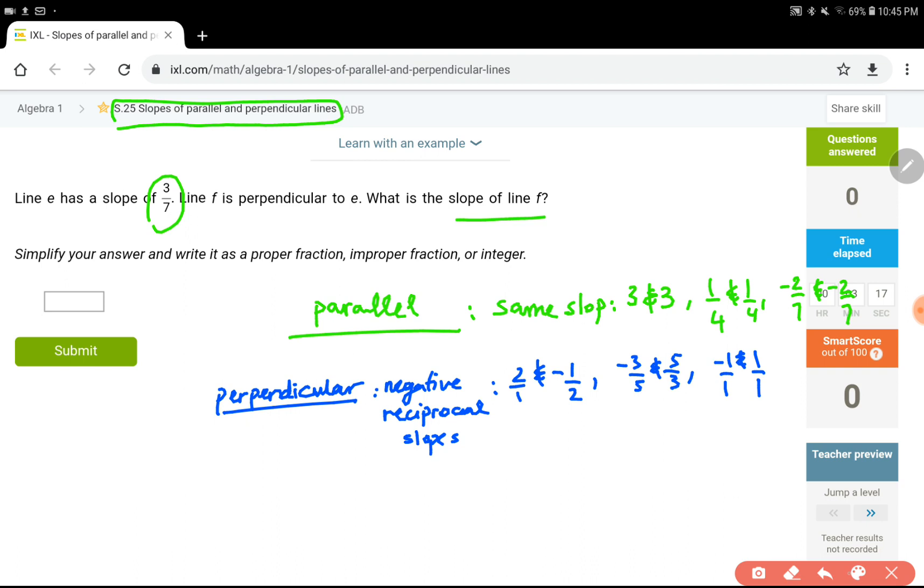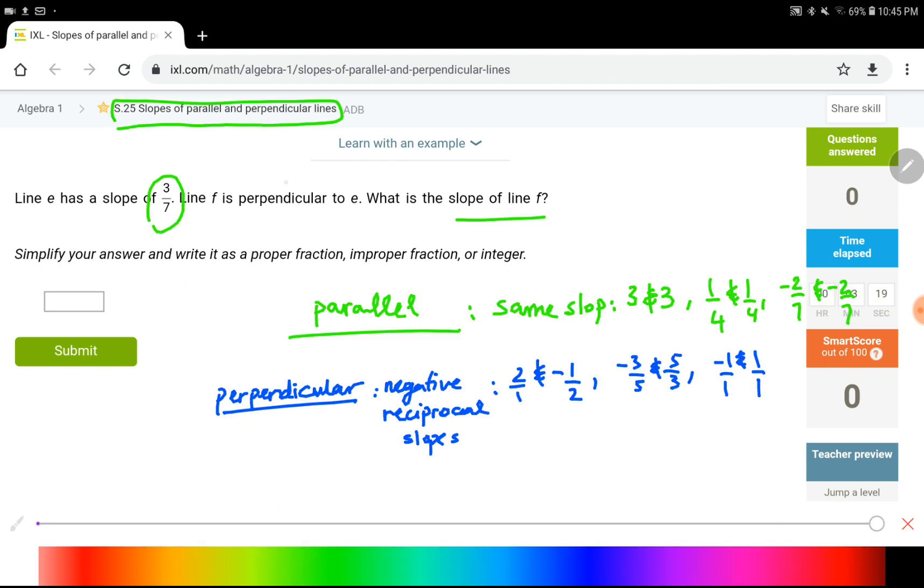Now our key word here is we have perpendicular two lines. One of them has a slope of 3 over 7. The other one is going to be negative 7 over 3. So this would be our answer.